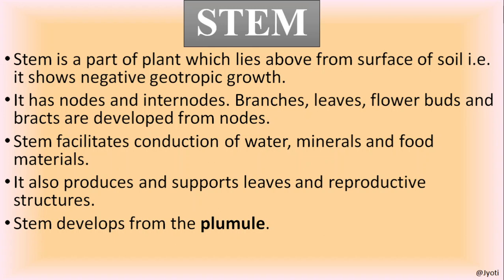The stem facilitates conduction of water. Once the root absorbs minerals and water from the soil, the stem conducts water to different parts. Water and minerals are carried to the leaves for photosynthesis through the stem, and the food synthesized in the leaves is distributed to different parts of the plant body through the stem. The stem also produces and supports leaves and reproductive structures like flowers and fruits.